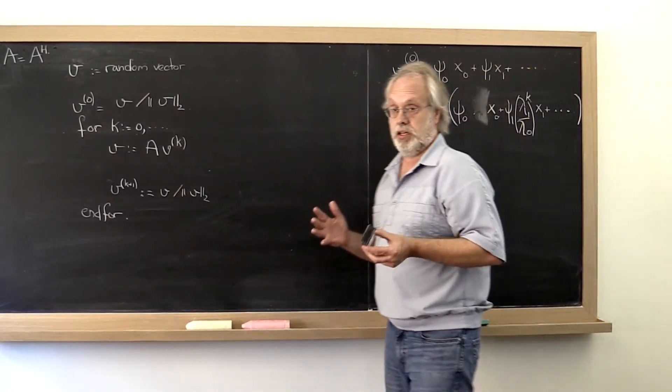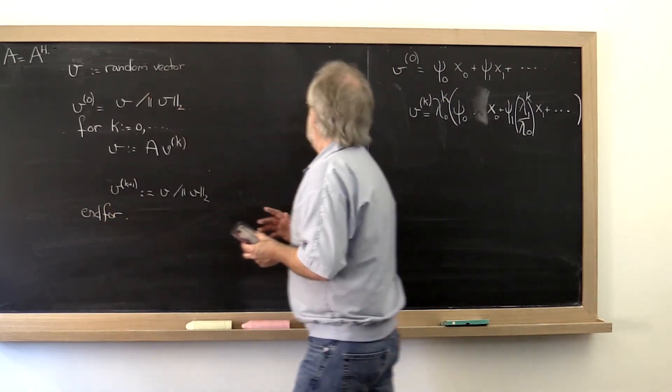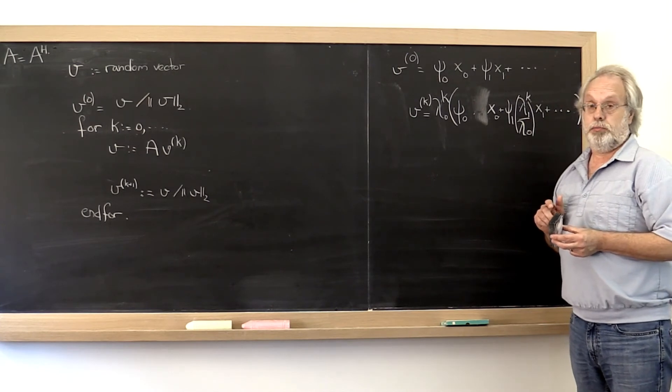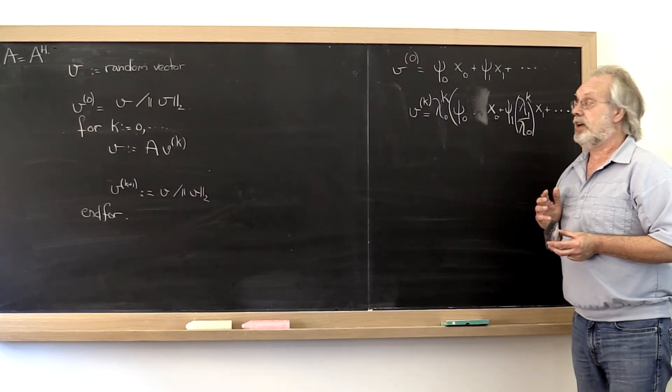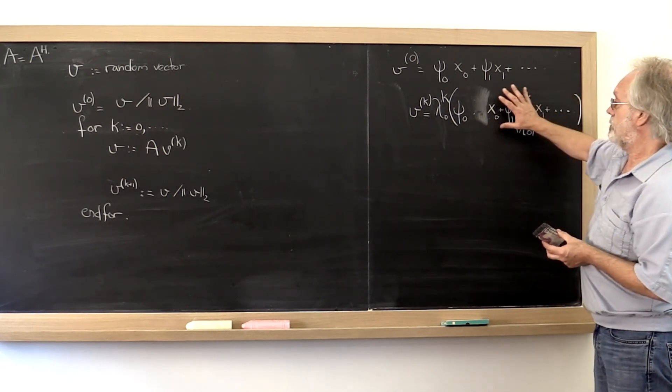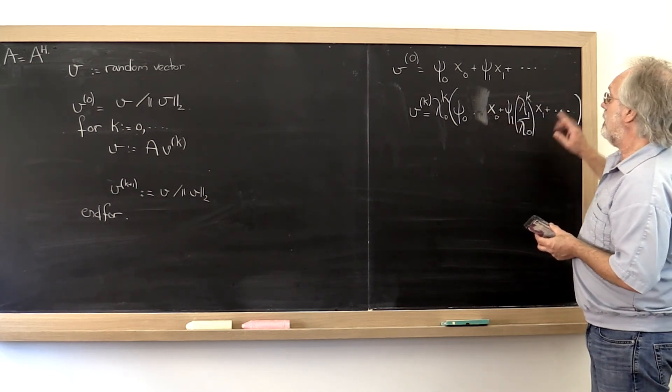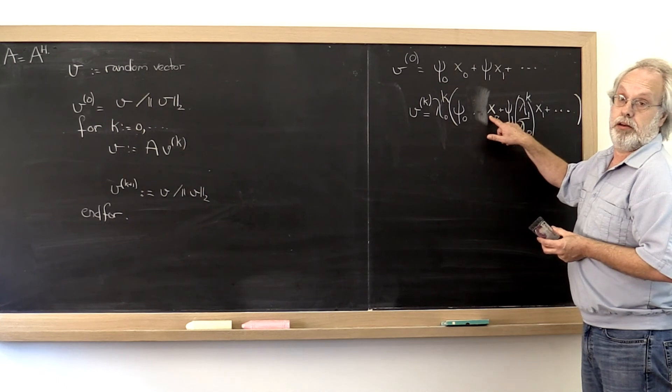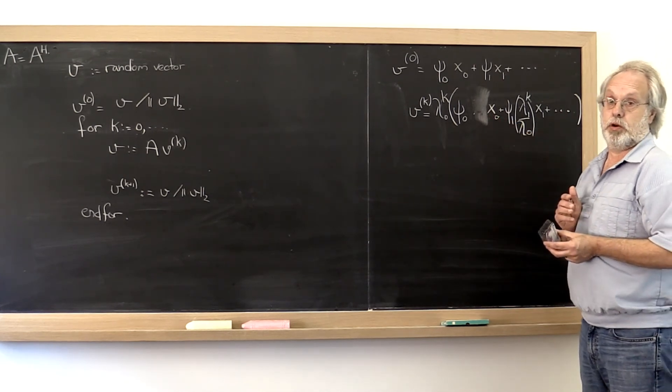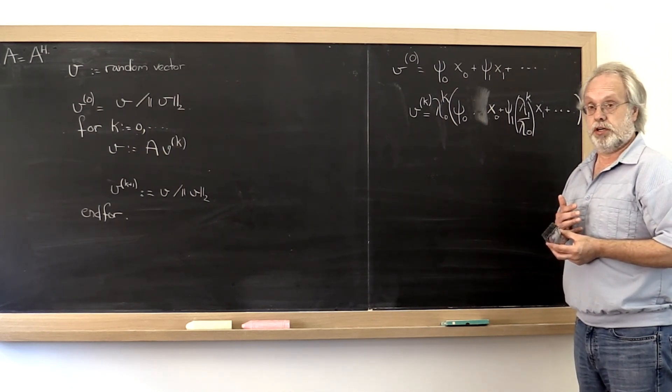Now, importantly, since we are restricting ourselves to Hermitian matrices, we know that the eigenvectors are orthogonal, mutually orthogonal. And therefore this linear combination of all of the other eigenvectors that we're not converging to is inherently orthogonal to the eigenvector to which we are converging, or the direction to which we're converging. And that's going to play an important role in our discussion.